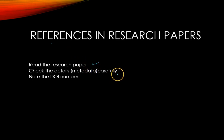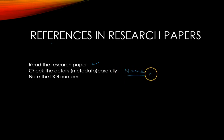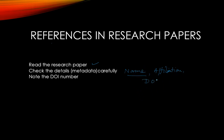The second point is that the reference database is important. Check the details of the research paper very carefully. For example, the name of the author, their affiliations, the affiliations of the researcher, and then the DOI number — which is also important but comes at the end. First of all, check the name of the author.